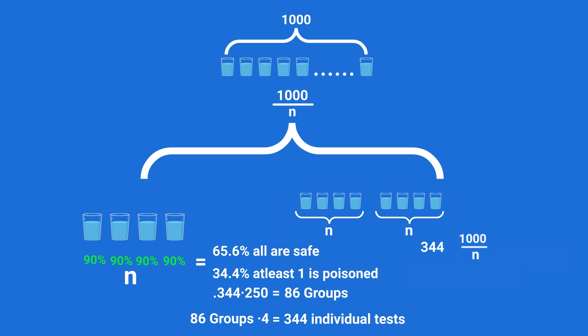We'll say each drink has a p chance of being poisoned instead of 10%, we'll make it more generic, thus the chance a drink is not poisoned is 1 minus p. So for a single group the chance that all the drinks are safe is 1 minus p to the n, because we gotta multiply that probability by itself n times.